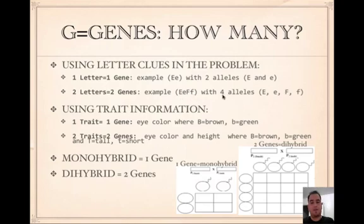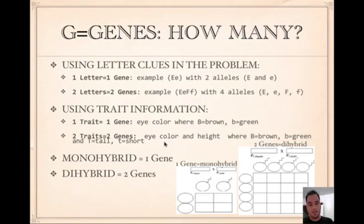You can use trait information to determine the number of genes. If they mention one thing, like eye color and that's it, that's one gene. If they're talking about eye color and height, that's two genes. When talking about one gene, we use a monohybrid cross — one gene, two alleles, and a four-box Punnett square. If it's dihybrid, that means two genes, four alleles, and the 16-box Punnett square.